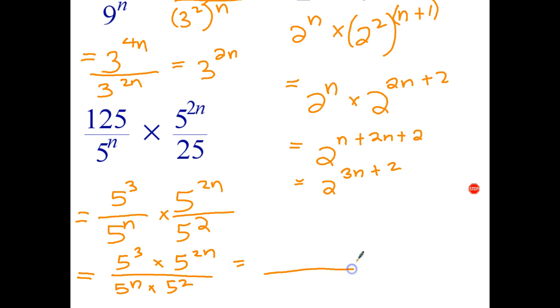Okay, the next step: let's simplify the numerator. To multiply powers with the same base, add indices: 5 to the 3 plus 2n, and I'll just rewrite that as 2n plus 3 because I can add in any order. 5 to the n times 5 squared is 5 to the n plus 2.